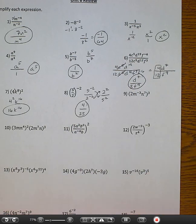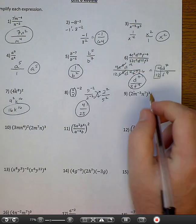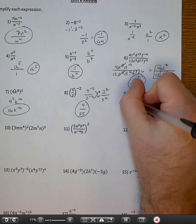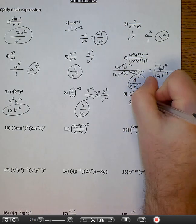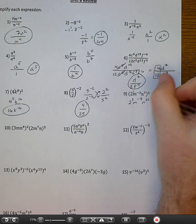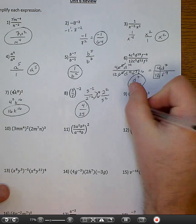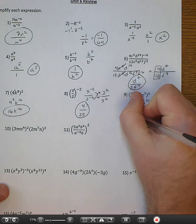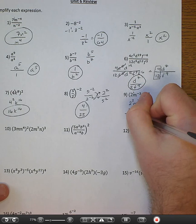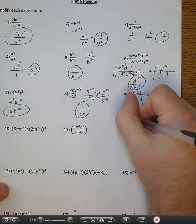Number nine. Two to the negative third and m to the seventh, to the third power. Everything in there gets to the third power. Put a one here — I'm going to multiply each exponent by three. So two to the third, m to the negative ninth, and n to the twenty-first. Now I'm just going to move things around and simplify. Two to the third is eight. M to the negative ninth goes to the bottom. And n to the twenty-first stays there. And we're done.